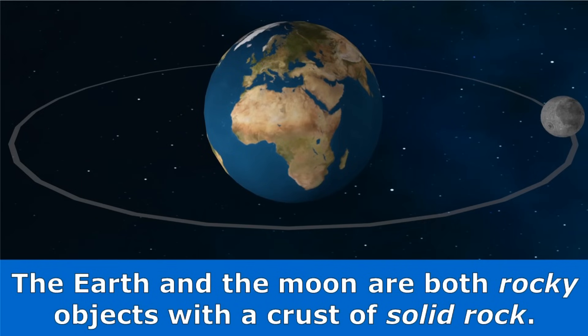The Sun is made of very hot gases, but the Earth and the Moon are both rocky objects, with a crust of solid rock.